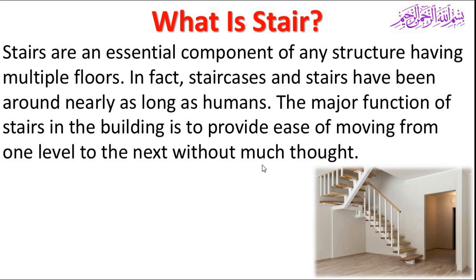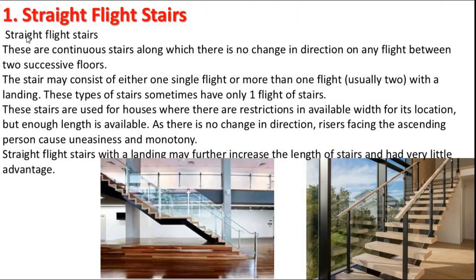Number one: straight flight stairs. These are continuous stairs along which there is no change in direction on any flight between two successive floors. The stair may consist of either one single flight or more than one flight with a landing. This type of stair sometimes has only one flight and is used for houses where there is a restriction in available width but adequate length is available.